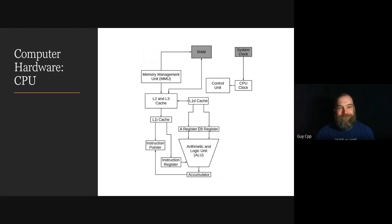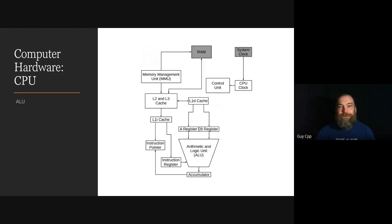Let's start with the CPU. Here's a conceptual diagram of the CPU. The ALU performs the arithmetic and logical functions that are the work of the computer. Two registers hold the input, one register holds the instruction to perform, and the accumulator receives the result of the operation. That's basically it — that's a computer.